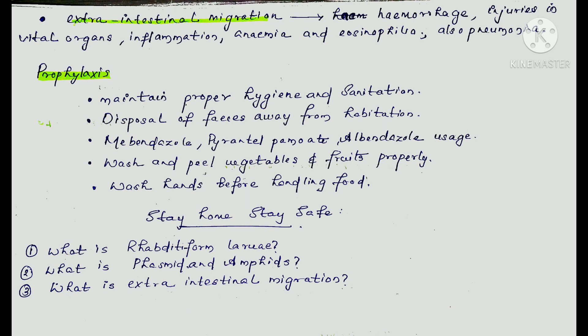So this is the topic of Ascariasis. Let's talk about the essay question. Topics such as rhabditiform larvae — one mark in 2016 — phasmids and amphids, and extra-intestinal migration are important. If we are learning the essay, we can read it carefully. This is the complete topic of Ascariasis.